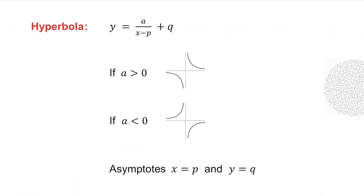With a hyperbola, the general equation is y equals a over x minus p, plus q. If a is positive, the hyperbola is in the first and third quadrants. If a is negative, it's in the second and fourth quadrants. To get your asymptotes, what is under the fraction gives you the asymptote x equals p, and the number after the fraction gives you the asymptote y equals q.